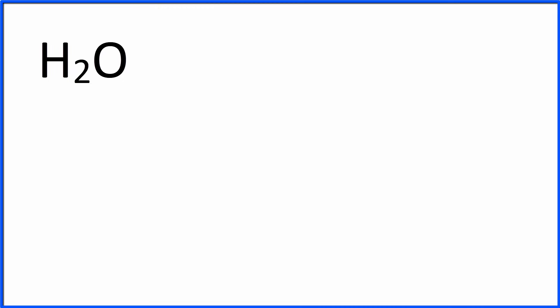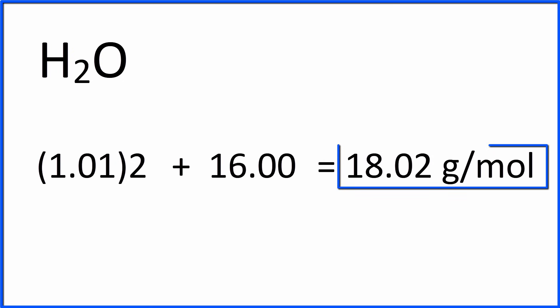But there's a quicker and easier way to do this. We can write the atomic mass for hydrogen and multiply that by two, and then add the atomic mass for oxygen, and that'll give us the molar mass for H2O.